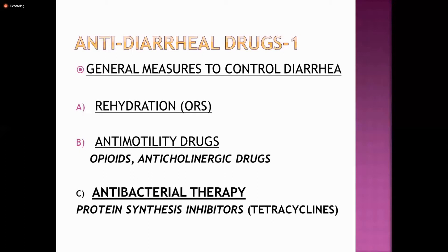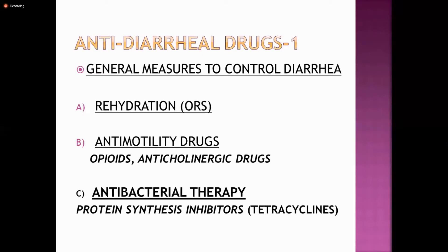Another approach is to slow the motility of the GIT, because diarrhea is a condition in which there is hyperactivity of the gut. You can reduce this hyperactivity using anti-motility drugs. We discussed opioids in this category, and specifically selective opioids which have only local action on the GIT without systemic effects.